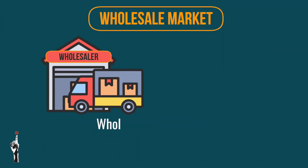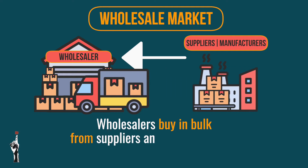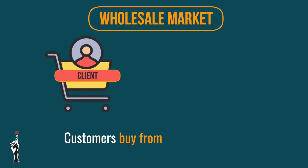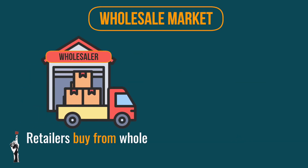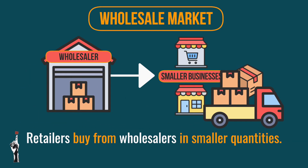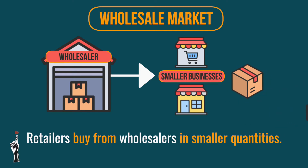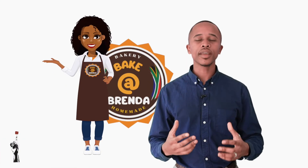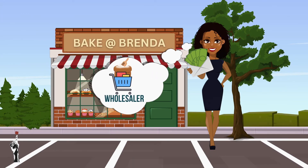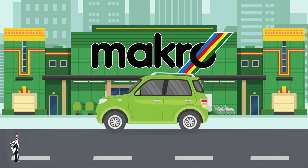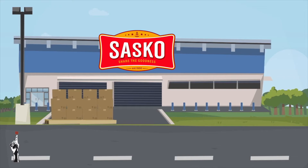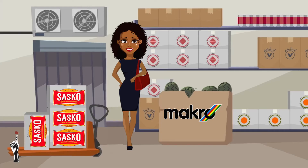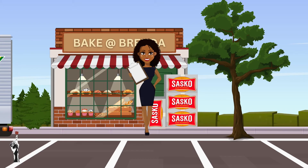A wholesale market is where wholesalers buy in bulk from suppliers and manufacturers. Customers then visit the wholesalers and buy from them, especially if they cannot buy directly from the supplier. Typical clients for wholesalers are smaller businesses that need smaller quantities of a product. For example, Brenda from Bake at Brenda purchases flour from the closest wholesaler, Macro, rather than going directly to suppliers like Sasko, because Macro is close to her business and supplies the quantities she needs.